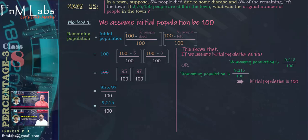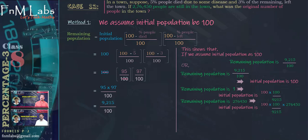Now we apply the unitary method. If the remaining population is 9215/100, the initial population is 100. So if remaining population is 1, the initial population is 100 × 100/9215. This means if the remaining population is 276,450, the initial population will be equal to (100 × 100/9215) × 276,450. This becomes 100 × 100 × 30, that is equal to 3 lakh. Thus, the original population of the town was 3 lakh.